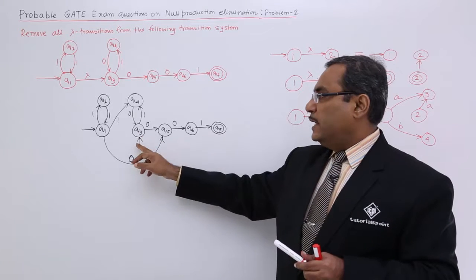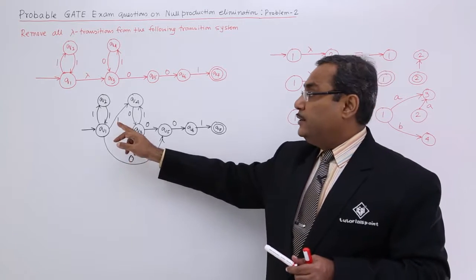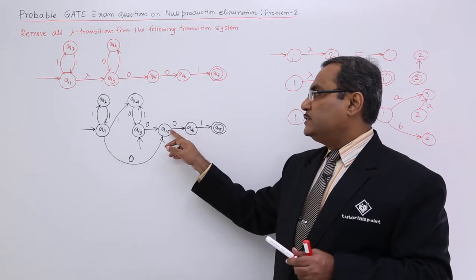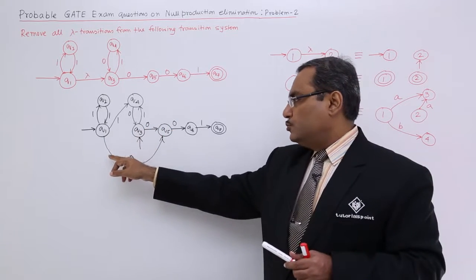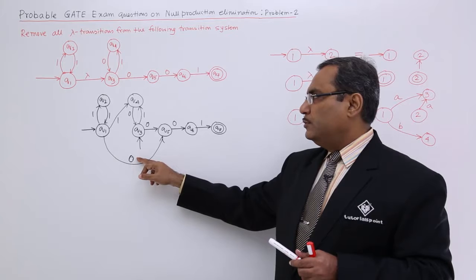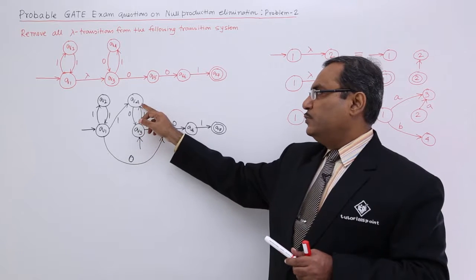I have made this one as initial state as it was initial state. Outward edge was this with the label 0, so to the same next state with the label 0. Outward edge was this with the label 1.